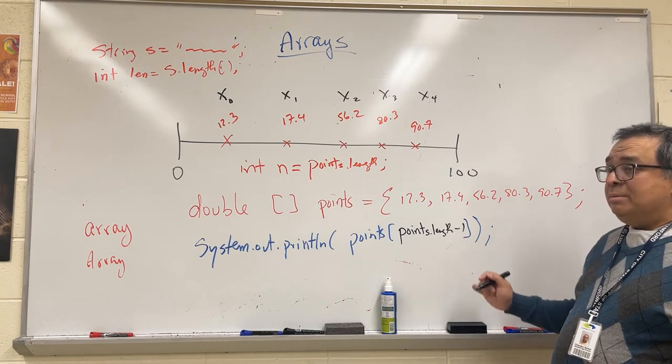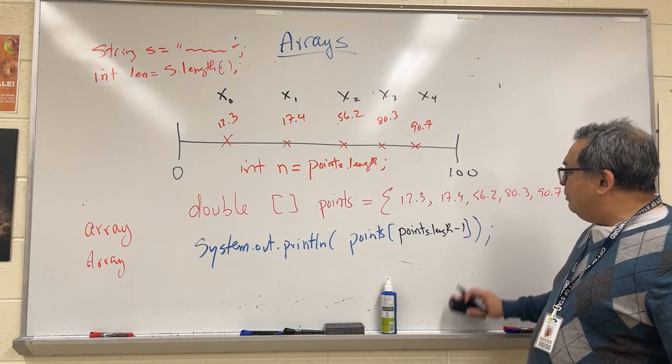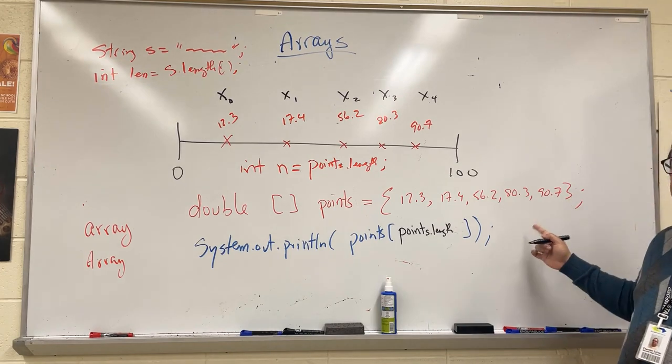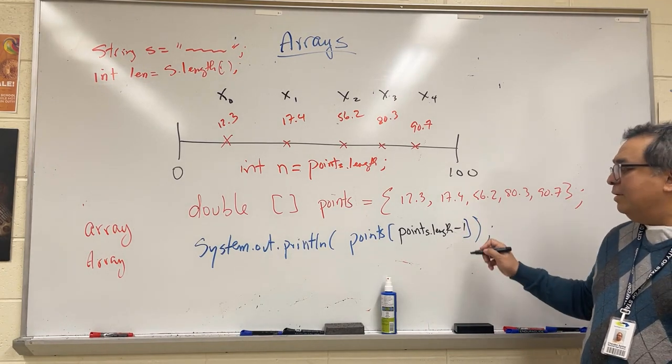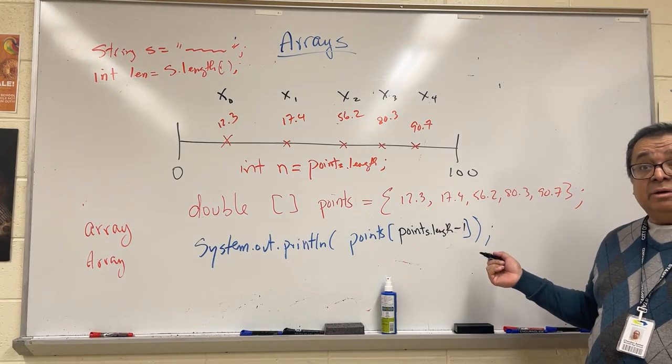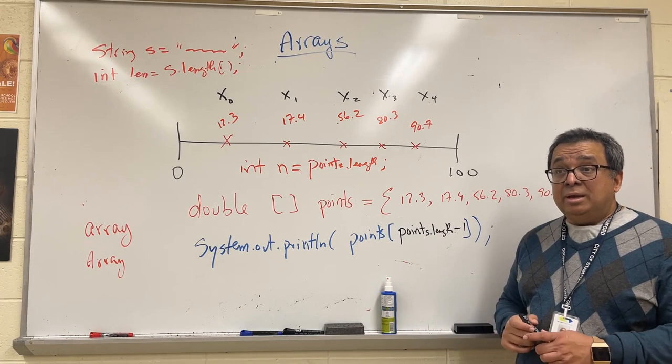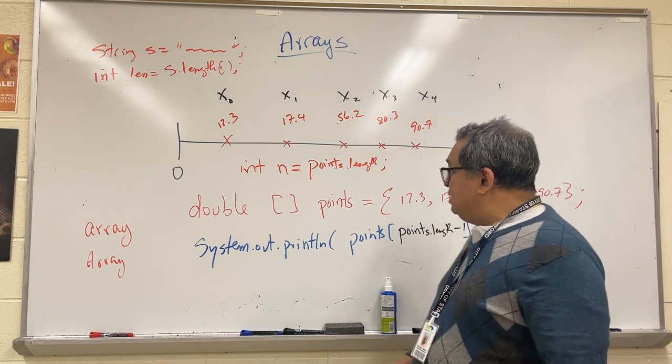So that minus one is important. What do you think will happen if I don't put the minus one here and I try to access the element that's after this? Mr. Snead? I'll get an out of bounds error—array index out of bounds error. You'll be getting a lot of those over the next couple of weeks until you get used to it.